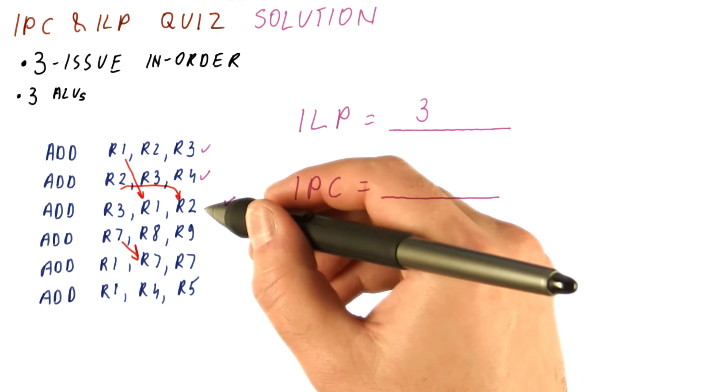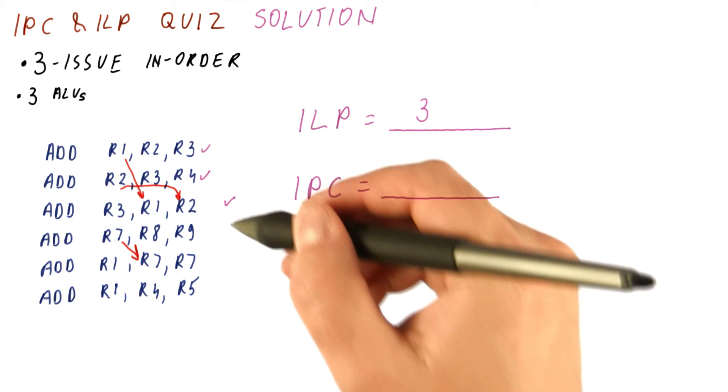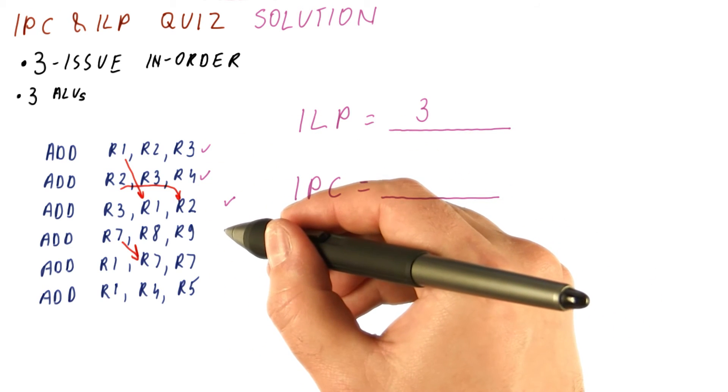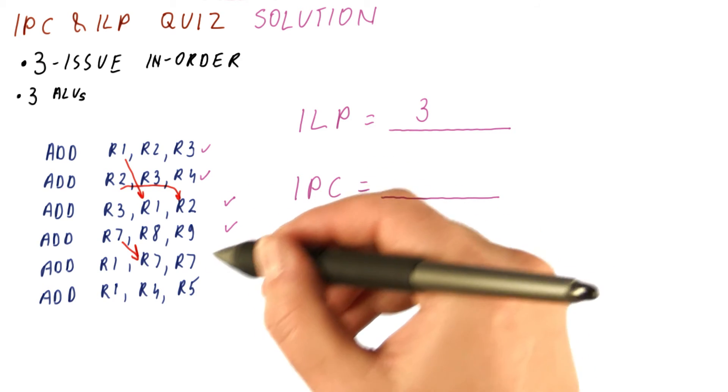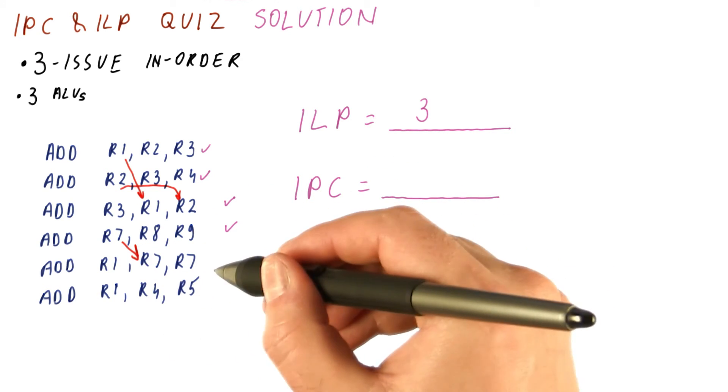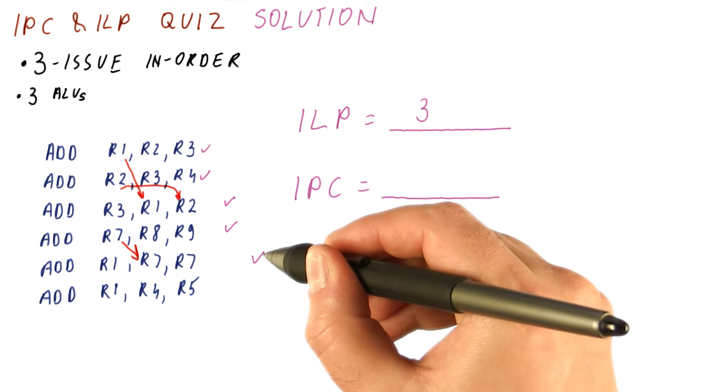In the second cycle, we are able to execute this instruction, because now the first two are done. We can execute this one, because now that this one is done, this is eligible for execution. And then we have to stop here because of this dependence.